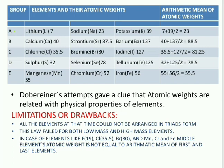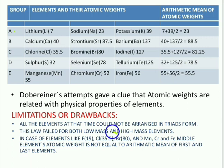Now, coming to the drawbacks. This theory has some drawbacks. First, all the elements at that time could not be arranged in triad form. This law also failed for both low mass and higher mass elements. In the case of elements like fluorine, chlorine, and bromine — fluorine's atomic mass is 19 and bromine's atomic mass is 80. If you take the average of 19 plus 80, that is 99, the arithmetic mean is 50. But that is not equal to chlorine's atomic mass, which is 35.5. The value 50 is very far from 35.5, so this triad failed.